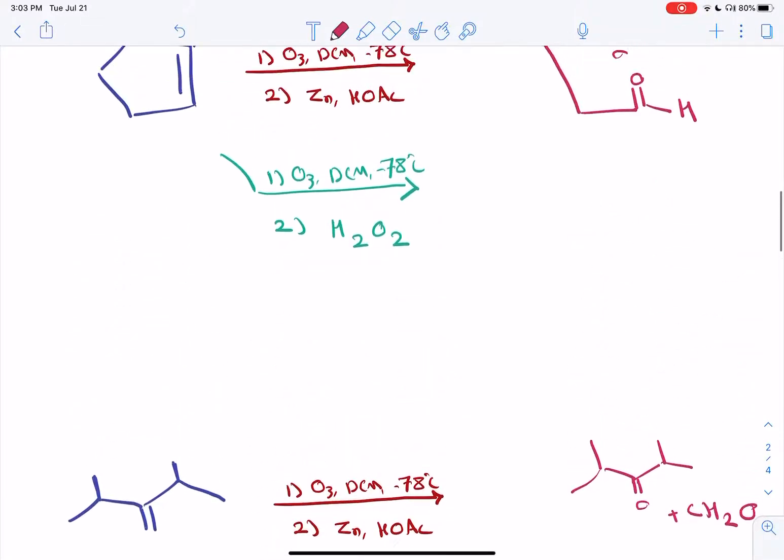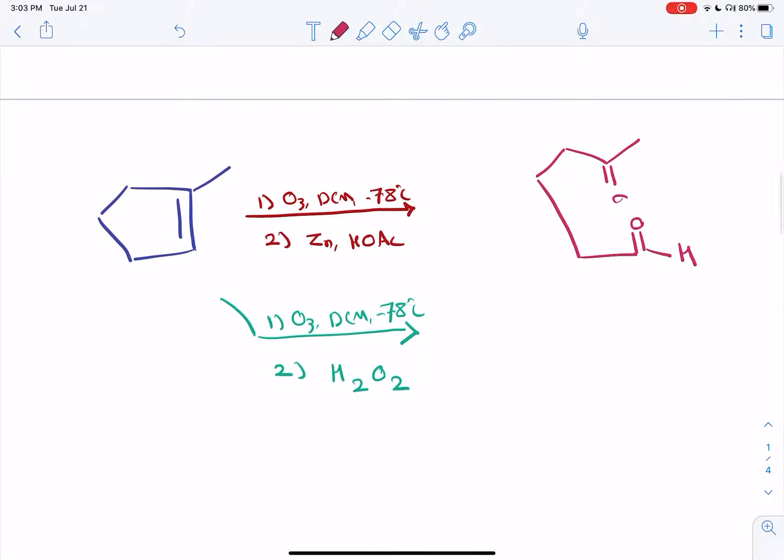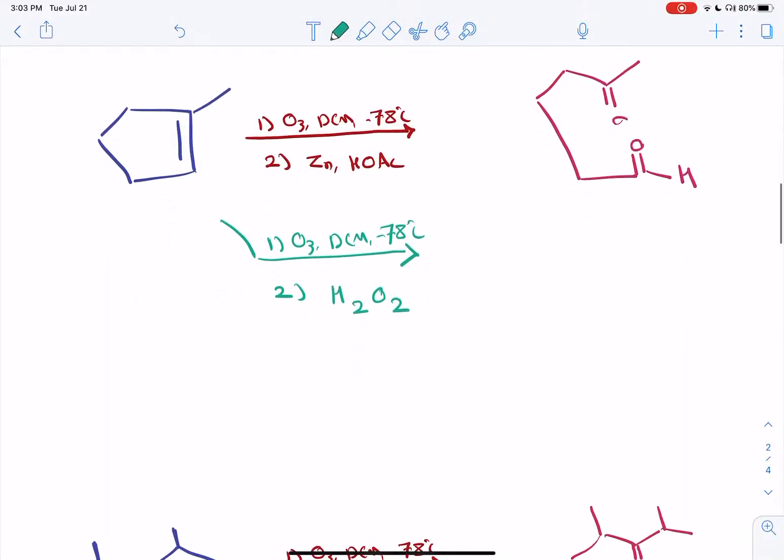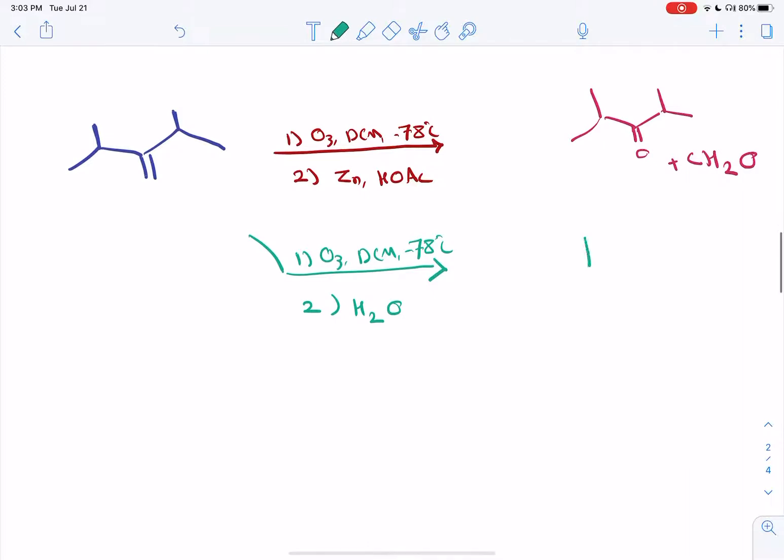If you subject your ozonide to oxidative quenching conditions, the product is going to depend on the substitution pattern of the alkene. The disubstituted carbons of the alkene are going to turn into a ketone. Monosubstituted carbons of the alkene are going to turn into a carboxylic acid. And non-substituted carbons of the alkene are going to turn into CO2, just like when you oxidize an alkene using permanganate.